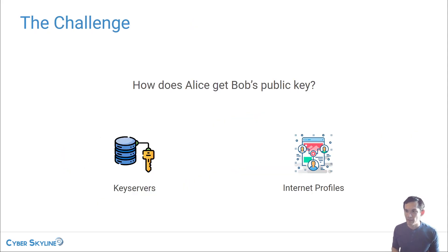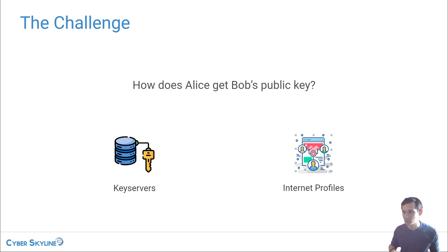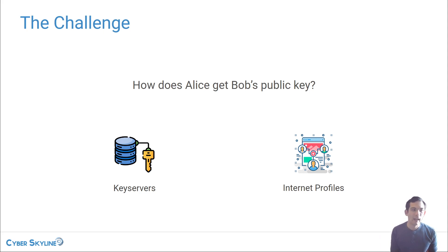Bob would need to publish his public key somewhere ahead of time — that's the only way Alice can get it. Assuming they don't know each other personally, Bob needs to publicize it over the internet. There are a couple of ways he can do that, and ideally he publishes it in as many places as possible, because that increases the amount of trust others will have that the key is actually his.